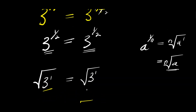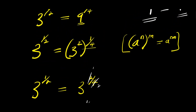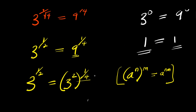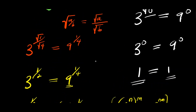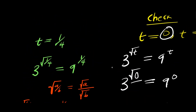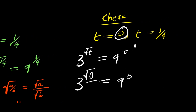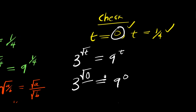And that is it. So don't forget to subscribe and share this video with your friends. The two solutions are t equals 0 and t equals 1 over 4, and both solutions have been proven to be correct.